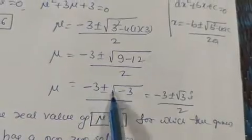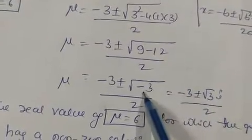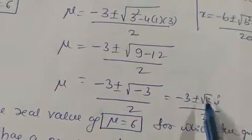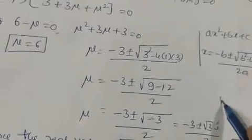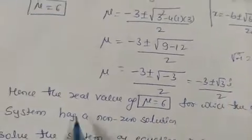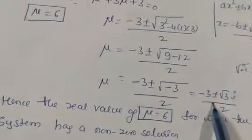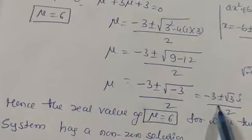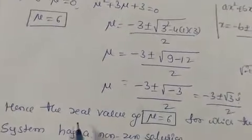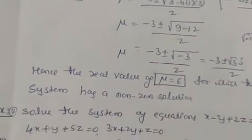This gives mu equals [minus 3 plus or minus sqrt(minus 3)] divided by 2. Since sqrt(minus 1) equals i, we get mu equals [minus 3 plus or minus i*sqrt(3)] divided by 2 — imaginary numbers. Since the question asks for the real value of mu, the answer is mu equals 6, for which the given system has a non-trivial solution.